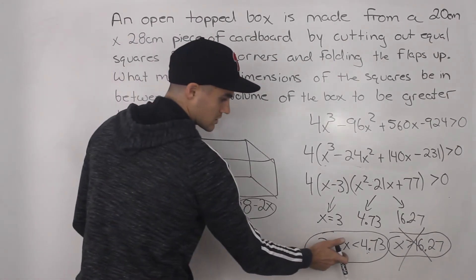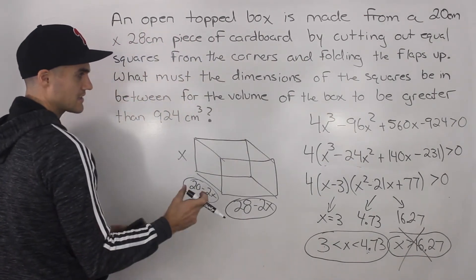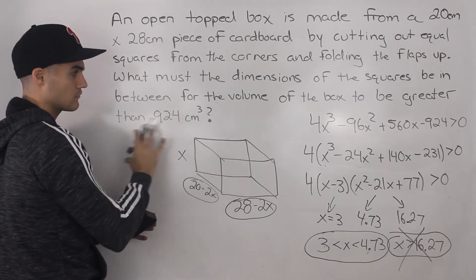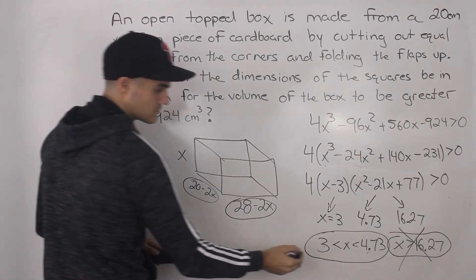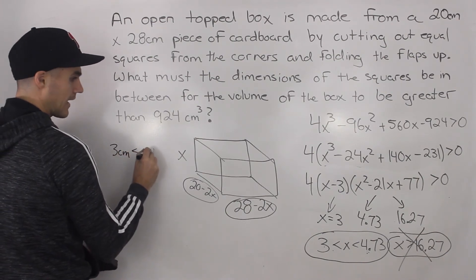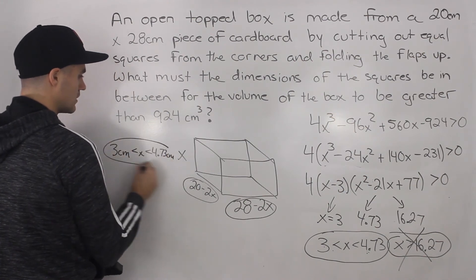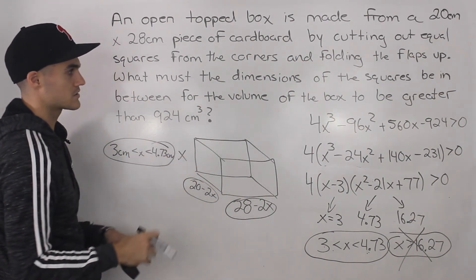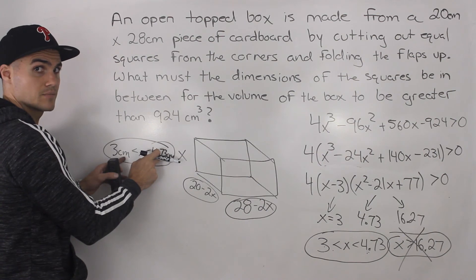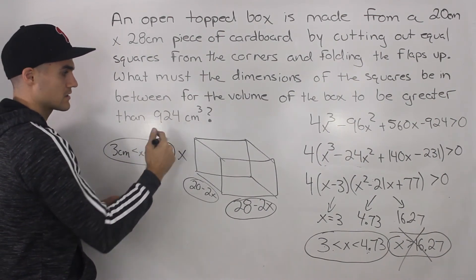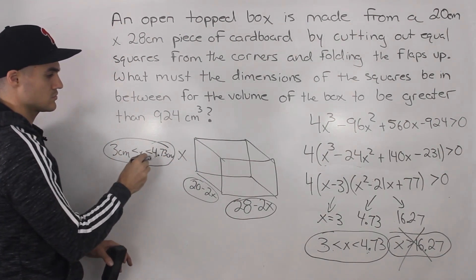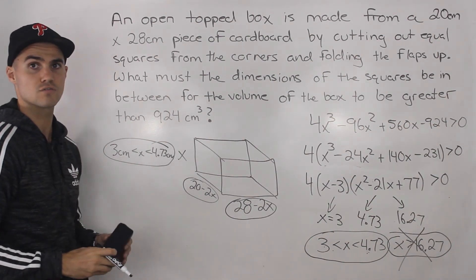So the answer to this question is: the dimensions of those corner squares have to be in between 3 centimeters and 4.73 centimeters in order for the volume of this box to be greater than 924 cubic centimeters. If the dimensions are anything outside of this interval, then the volume of the box is going to be less than 924. So those are the only possible solutions, and that is your final answer.